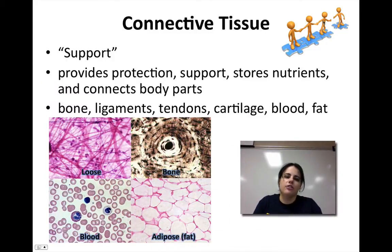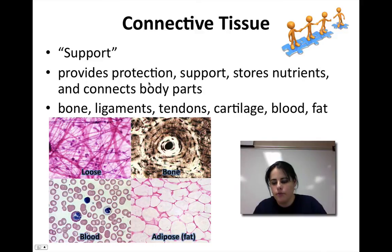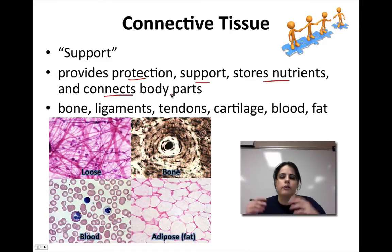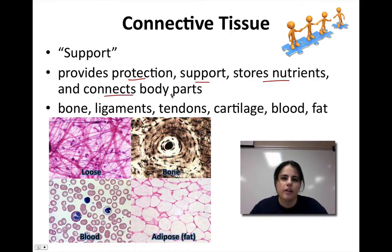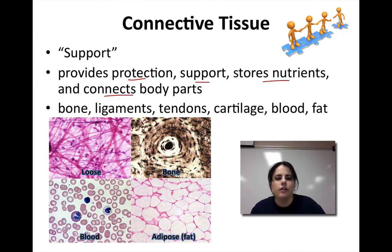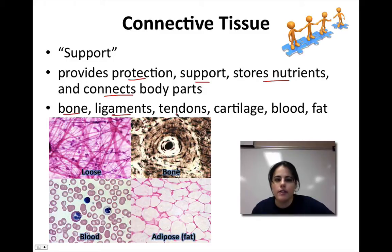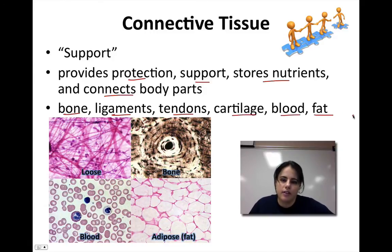Our next type of tissue is connective tissue. Connective tissue supports and provides some protection, gives support, is able to store nutrients, and connects all your body parts together. It is the most abundant tissue type of the four in the body because it holds your body together — it's the glue that holds everything together. Our bones, ligaments, tendons, cartilage, blood, and even fat are the main types of connective tissue.